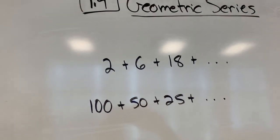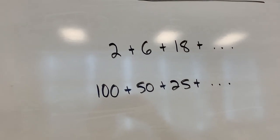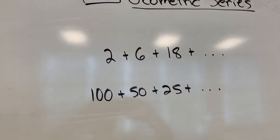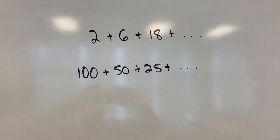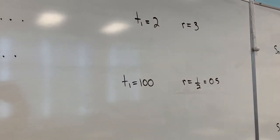I have a couple examples of geometric series here. First of all, they need to be geometric, meaning they have a common ratio. In the top series here, you can see it multiplies by 3 to get the next term, so the common ratio would be 3. On the bottom one, it's multiplying by a half or by 0.5 each time, and so the common ratio would be a half.